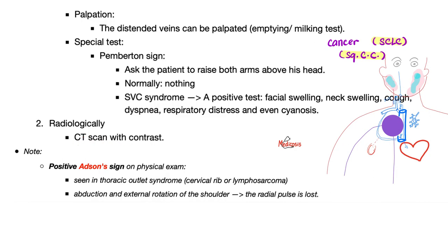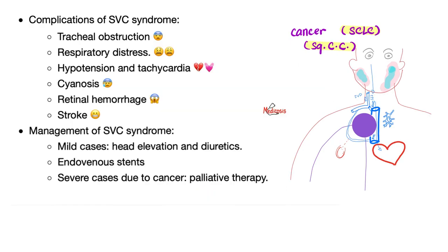Radiologically, CT scan with contrast will show you the lesion. Pemberton sign is kind of similar but not identical to Edson sign. In Edson sign, you ask the patient to abduct and externally rotate the shoulder, and the radial pulse will disappear. You can see this in cases of lymphoma, especially the paratracheal node, or congenital cervical rib.